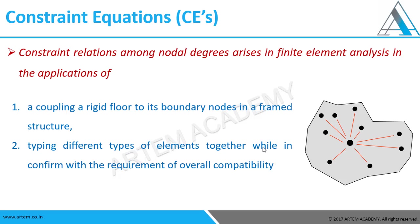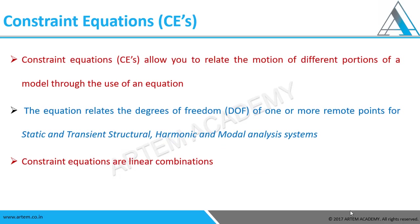This video covers types, functionality, and equations along with practical applications. The type of complexity involves tying different types of elements together, which reduces complexity and creates proper connectivity in the complete model. This meets the requirement of overall compatibility — this is where we commonly apply constraint equations. It allows you to relate the motion of different portions of the model through the use of an equation, giving the relative motion of that particular set of nodes according to the type and functionality.